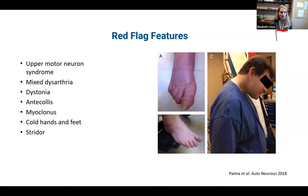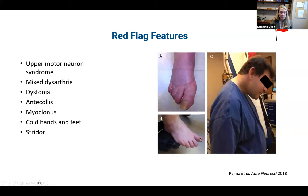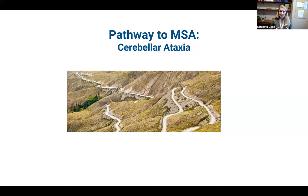Other red flag motor features include myoclonus — brief jerks that can look like a tremor — as well as cold hands and feet with color changes such as purple or red. An upgoing toe can represent an upper motor neuron sign or a striatal toe with a dystonic component. Anterocollis shows that forward projection of the head which can sometimes lead to a chin-on-chest type deformity. When we see a patient with ataxia who has some of these red flag features, we would be most suspicious for multiple system atrophy.